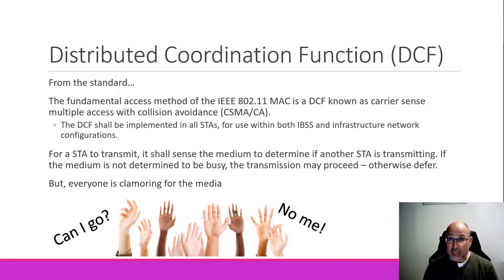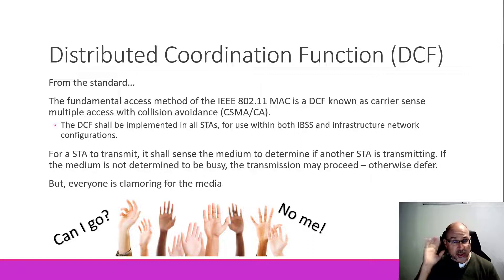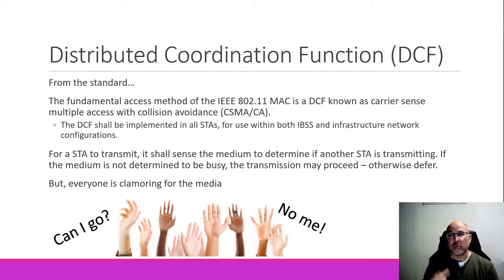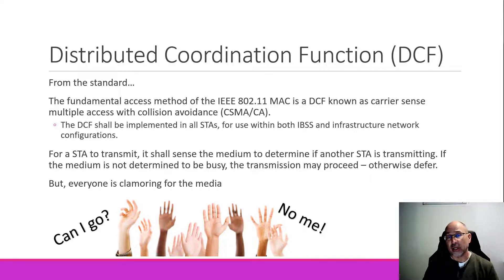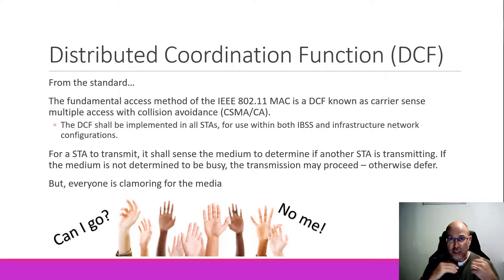For a station, or STA, to transmit, it's got to sense the medium and determine if another station is transmitting — that's the listening part. If it's not busy, you can go ahead and fire away. Otherwise, you have to do a deferral, meaning you wait for a little bit. The minute the DCF time period starts, everybody is clamoring for the media. And the minute somebody's done with a transmission and the subsequent ACK frame has been transmitted, everybody starts clamoring for the media again. The more wireless nodes you have out there, the worse it gets.